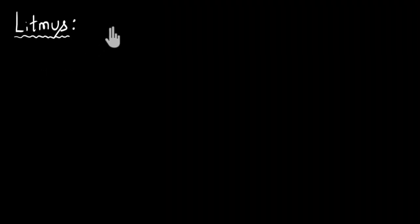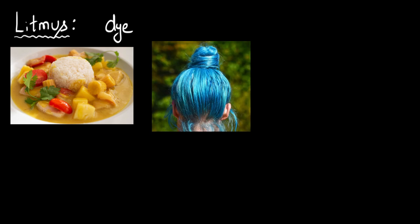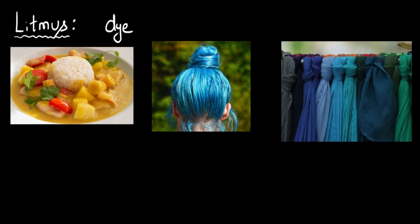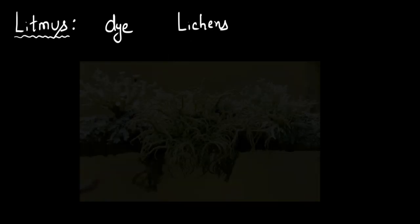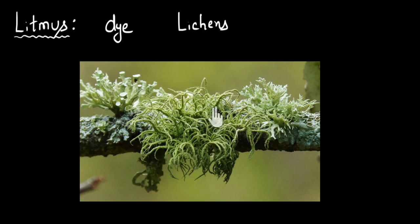Litmus is a dye, meaning a colored substance. We use dyes to color various things, like to color our food, our hair, and even clothes. Litmus is a dye we derive from lichens — lichens are a combination of algae and fungus. Basically, lichens are organisms from which we derive this dye called litmus, which can change its color when it comes in contact with an acid or a base, and therefore can help us identify an acidic or basic solution.